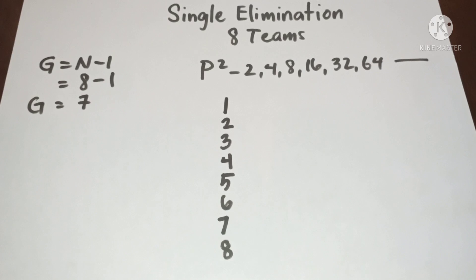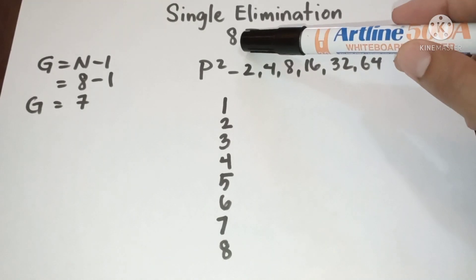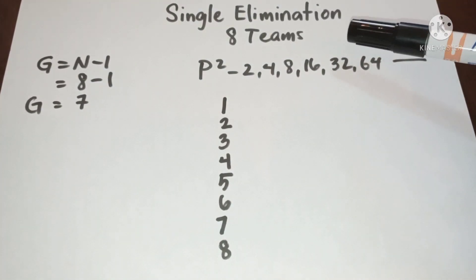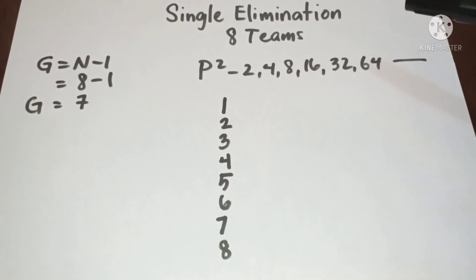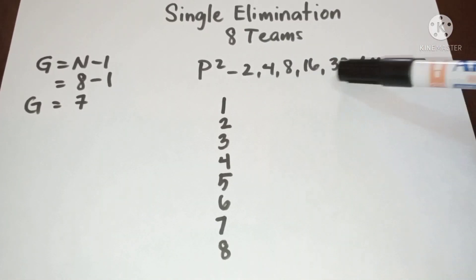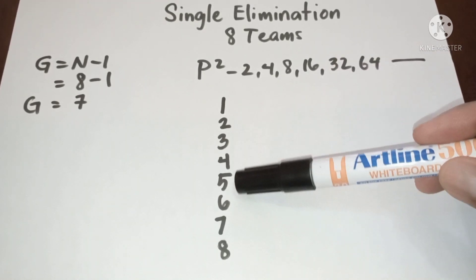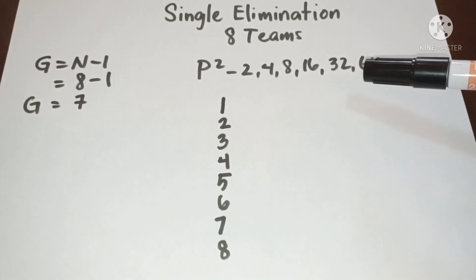Hello everyone, this is single elimination for eight teams. In eight teams we have seven games, and since eight is included in the power of twos, it has no bye, meaning all of the competitors will be playing in the first round.